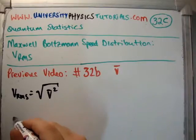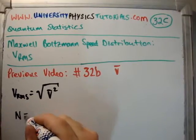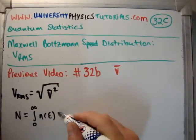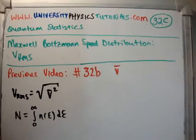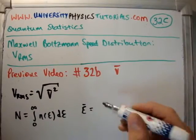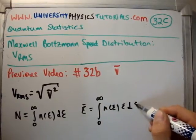So in the previous video we showed that to get, we used an analogy. In order to get the total number of particles in a system, what we had to do was we had to integrate the number density, d epsilon, if it's in terms of energy. In order to get the total average energy for a single particle, what we had to get was the integral of n of epsilon times epsilon d epsilon.